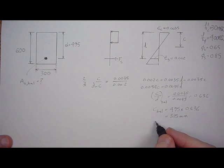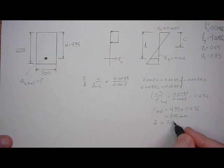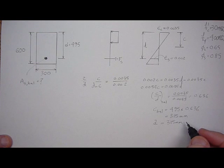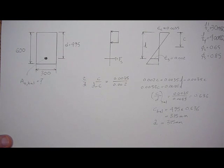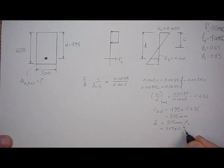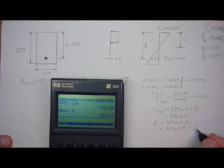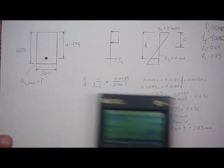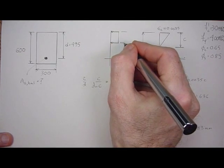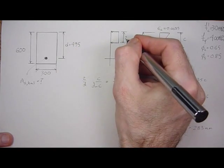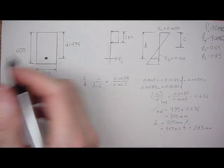And we could also find the corresponding A value, because we know 315 millimeters times beta, which is 0.85. So 315 times 0.85 equals A, 283 millimeters. So we know that this distance here, A, is 283. And we talked about the stress block in the previous tutorial.